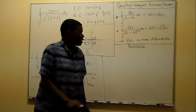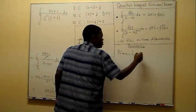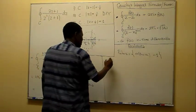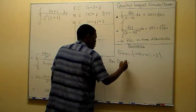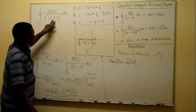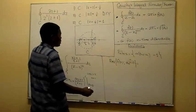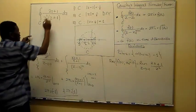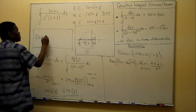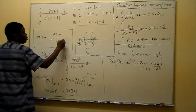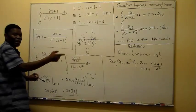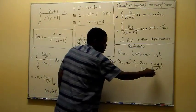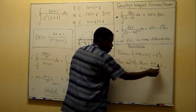In this approach, our poles are z = 0 (of order 2) and the simple pole z = minus 1. What I'm going to do now is calculate the residues at these poles. Starting with the residue of f(z) at z₀ = minus 1: we multiply f(z) by (z + 1) and take the limit as z → minus 1, leaving us with (2z + 1) over z-squared.